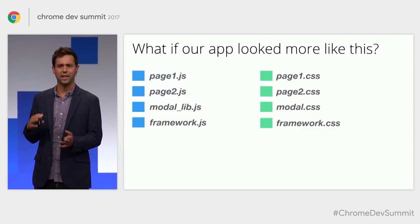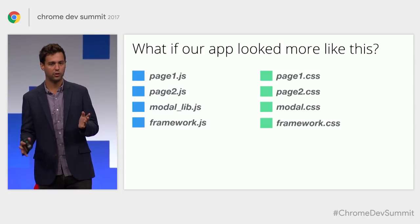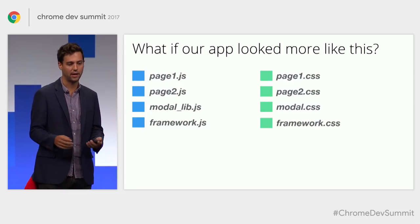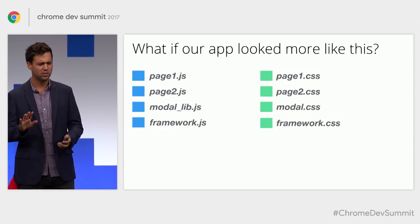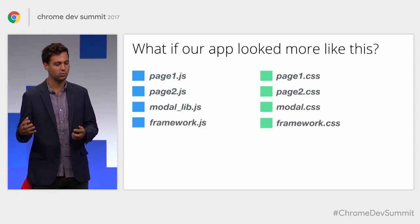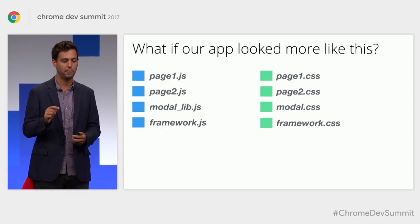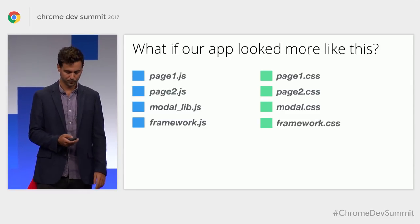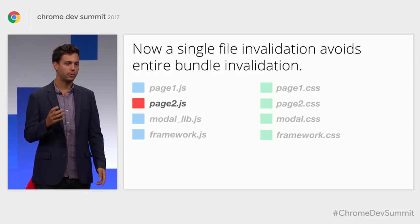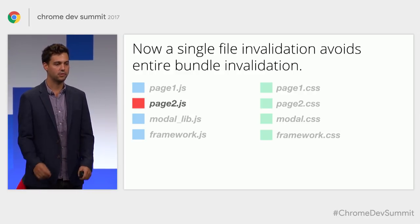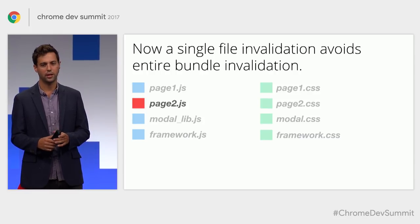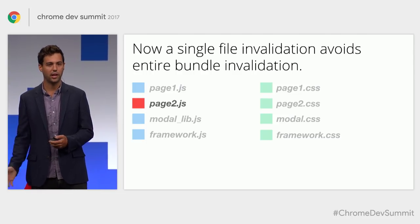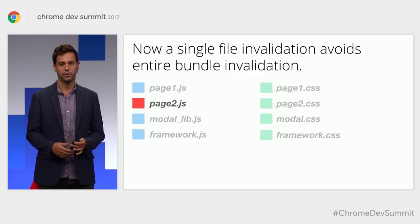What if our applications looked like this? Some of you may already be doing route-based splitting using React Router and Webpack. But I want to push it further — what if we took our individual routes and our individual libraries and shipped them independently? Page one, page two, modal library, framework, and all our CSS individually. Now when you make a bug fix to page2.js, instead of the entire bundle re-downloading, you only need to re-download one single file, and your users already have the majority of assets in their cache.